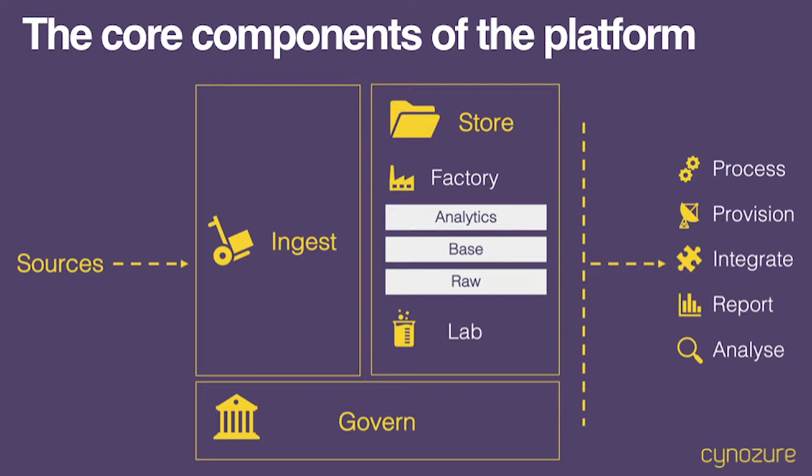And then finally on the right-hand side you've got all the tools and the ways of getting data out of a platform. Integrations into other platforms — so maybe you've got a CRM platform and you want to process some data and share it out to that CRM platform, perhaps through APIs. There's also the standard classic reporting: building BI reports, measuring KPIs, giving people dashboards and visualizations. And more complex analysis — that might be data science, machine learning, or complex statistical models.